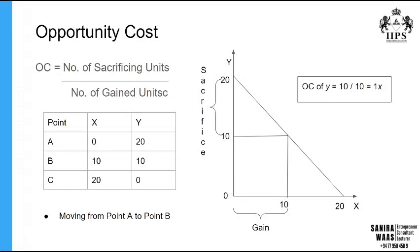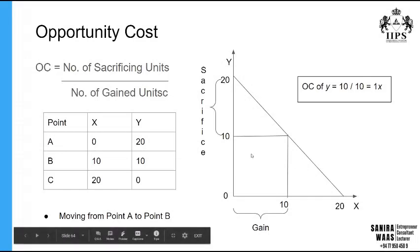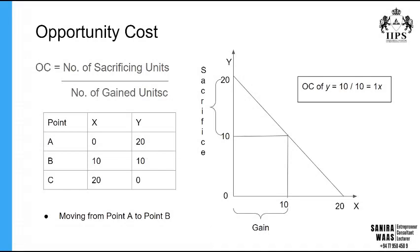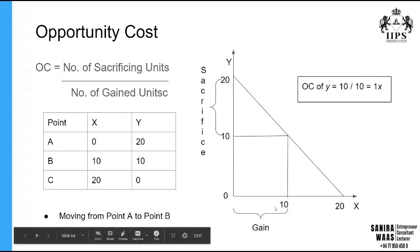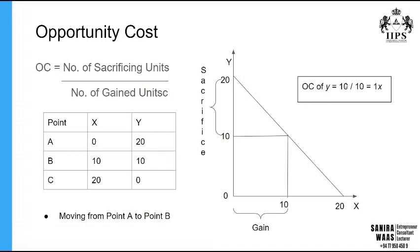If you haven't watched it, check the production possibility curve lesson series — the link is above. In accordance with production possibility curves, we assume the economy has only a limited or constant resource stock. Because of that, to gain something you must sacrifice something. So the opportunity cost calculation is: you sacrifice 10 units of Y to gain 10 units of X, therefore the opportunity cost of Y equals 1X.